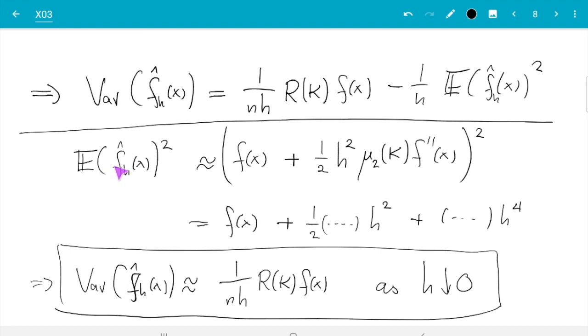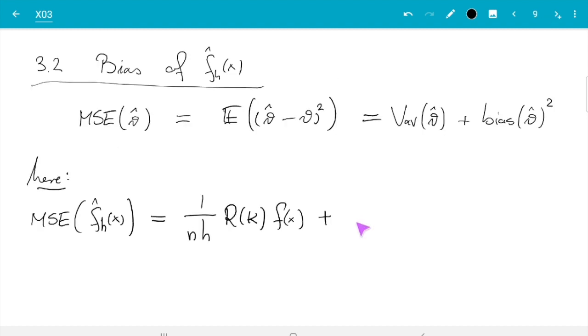And the bias squared: we just spoke about the bias in the previous video, we still need to subtract the truth to get the bias. So we need to subtract this f of x, and then the bias is this term, so 1/2 h² μ₂ of k f double prime of x, and that we still need to square because we need the bias squared.